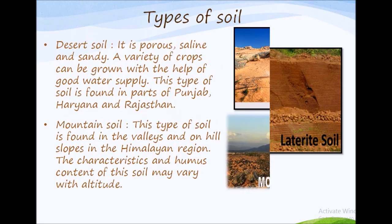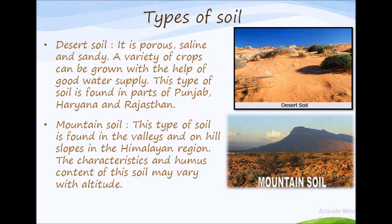Fifth is desert soil — it is porous, saline and sandy. A variety of crops can be grown with the help of a good water supply. This type of soil is found in parts of Punjab, Haryana and Rajasthan. The last one is mountain soil — found in the valleys and on hill slopes in the Himalayan region. The characteristics and humus content of this soil may vary with altitude.